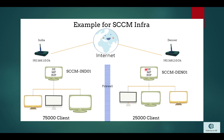If boundaries are not configured properly, there could be a possibility that my India client will go over the WAN to the Denver network and utilize the SCCM-DEN01 site system. This creates high bandwidth utilization and performance issues because the client from the India site going over the WAN to Denver to download content will take more time and consume higher bandwidth.